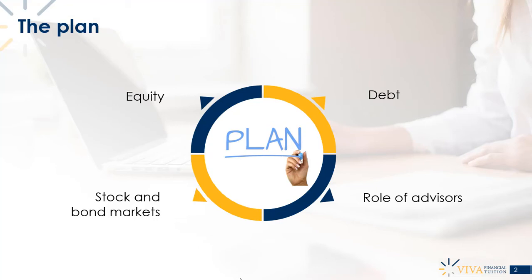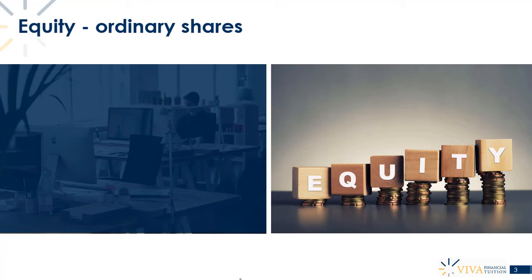Starting with equity finance, we're talking about the issue of shares. There are two types: ordinary shares and preference shares. Beginning with ordinary shares, it's important to get the terminology right. From a company's point of view, if it wants to obtain finance and get cash, it will issue share capital — an ordinary share is a piece of paper issued with an associated par value, sometimes called the nominal value.